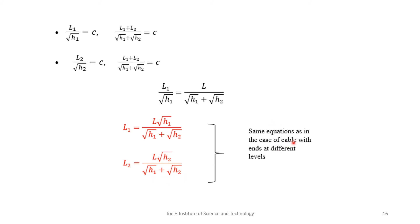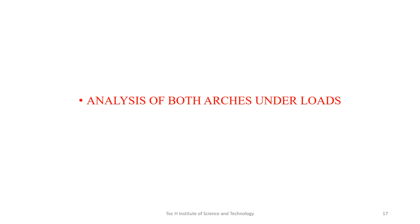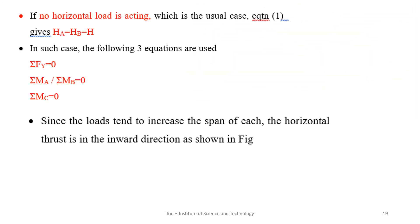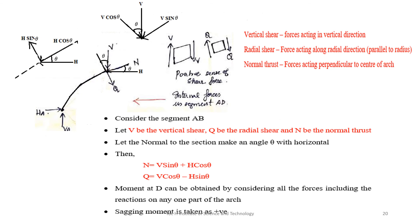These equations are the same as those for cables with ends at different levels, derived in the previous module on cables. For the analysis of arches, the horizontal thrust acts in the inward direction — unlike cables, where it acts outward. Consider a segment cut from the arch; we analyze the internal forces at that section.